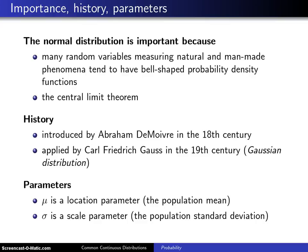The normal distribution is important because many random variables that occur in nature and man-made phenomena tend to have a bell-shaped probability density function.